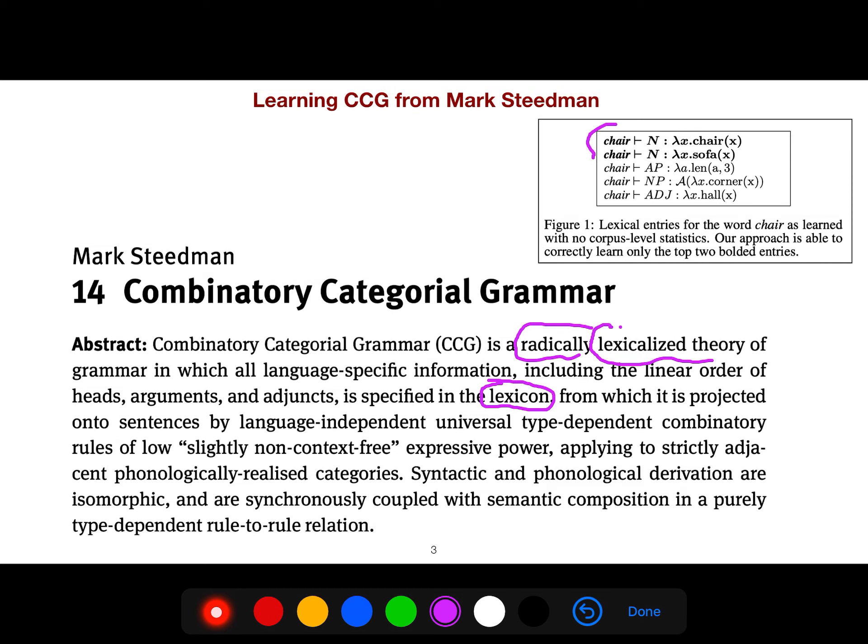Once you know that, then automatically it can generate everything and know which one is left of what, which one is right of what. It's very beautiful in this sense. In contrast to that, my playlist on probabilistic context-free grammar, in which we learn every rule, we have to learn which one matches. But here, everything is automatic.